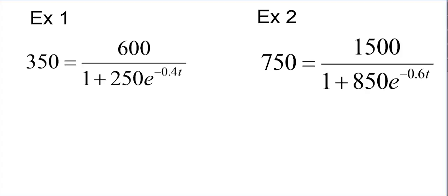So what we're going to have is 350, and we're going to multiply it by 1 plus 250 e to the negative 0.4t, and that's going to equal 600. When we do that, we'll multiply both sides. Next thing we're going to do is get the exponent by itself, so I'm going to divide both sides by 350 and that'll be nice.